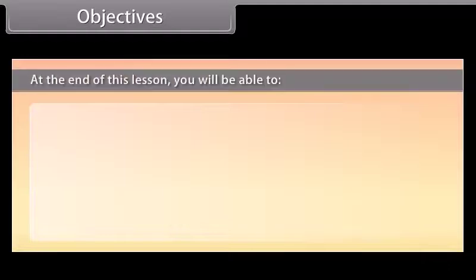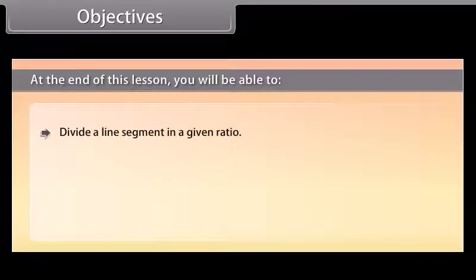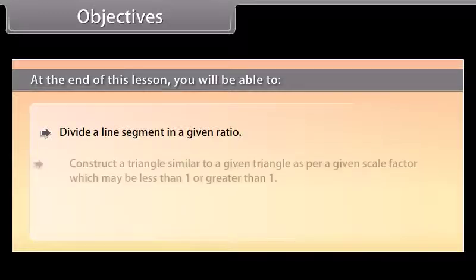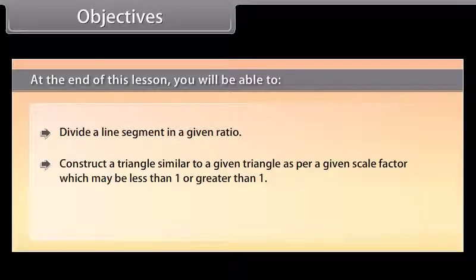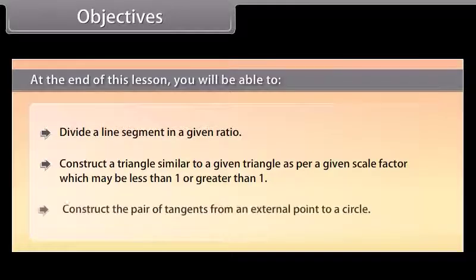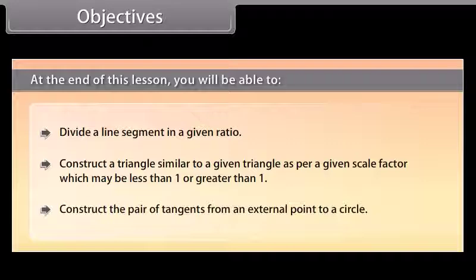At the end of this lesson you will be able to: divide a line segment in a given ratio; construct a triangle similar to a given triangle as per a given scale factor, which may be less than 1 or greater than 1; and construct a pair of tangents from an external point to a circle.